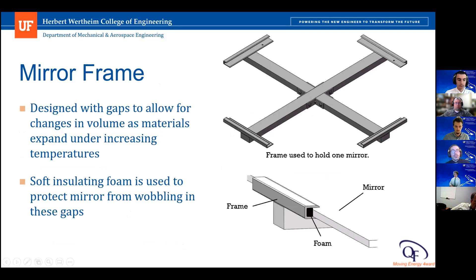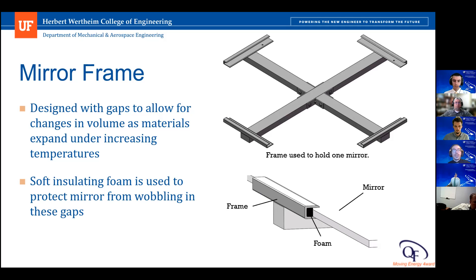The mirror frame itself consists of three ABS plastic pieces connected with L-brackets, as well as mirror trims on the end of each frame piece. This modular design allows each piece to be easily replaced, as well as easy removal and installation of the mirror. The gap in the trim allows the mirror to sit in the frame while also accommodating changes in volume due to thermal expansion. A soft insulating foam is also used in each trim to prevent wobbling while protecting the mirror.